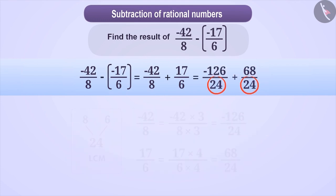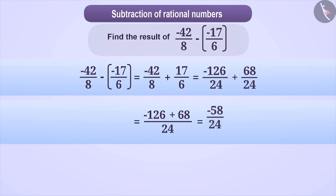When denominators are equal, we add the numerators and keep the denominator the same. The sum of the numerators is -126 + 68 which is equal to -58. So we get the answer as -58/24 which can be simplified to -29/12.